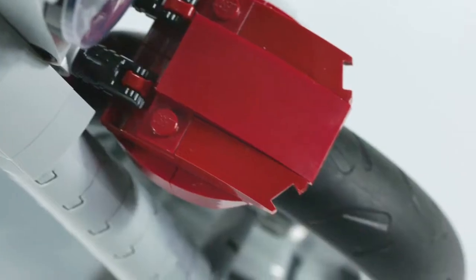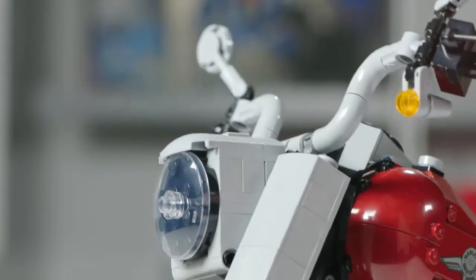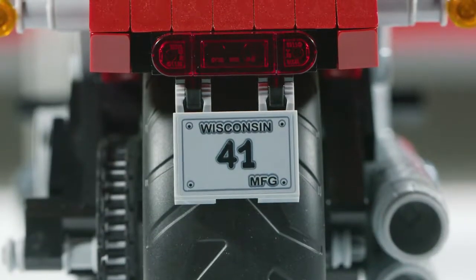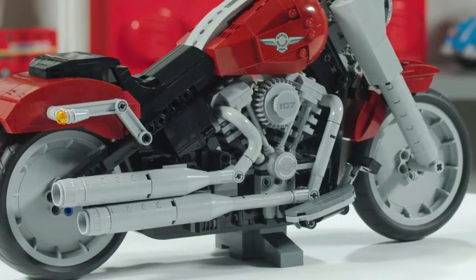We have the rubber tires, we have a working engine, we have steering, we have all the detailed exhaust, the lights, the license plate, even down to the levers for the brakes and the shifters.